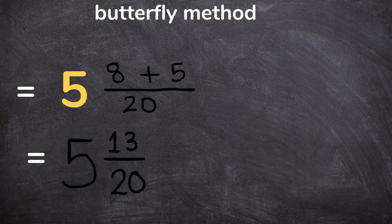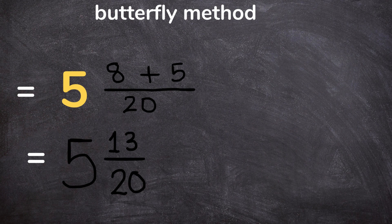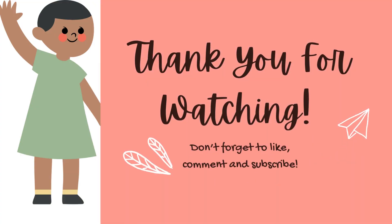Count your fingers or use your sticks, 8 plus 5 is 13 and the denominator is 20. So your final answer will be 5 and 13 over 20.